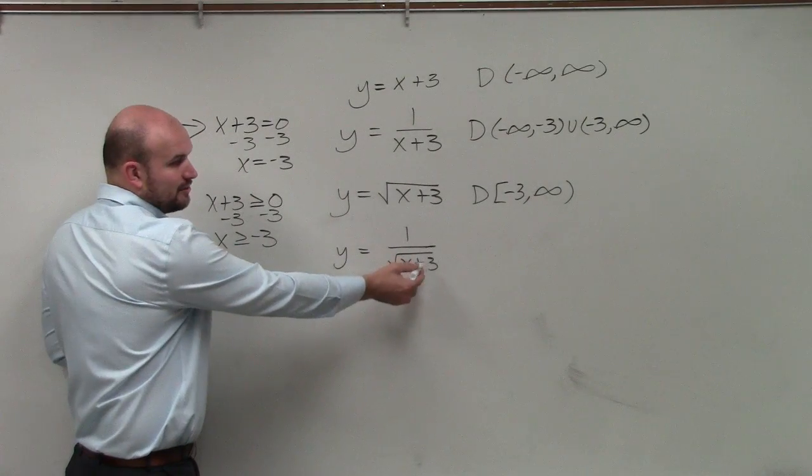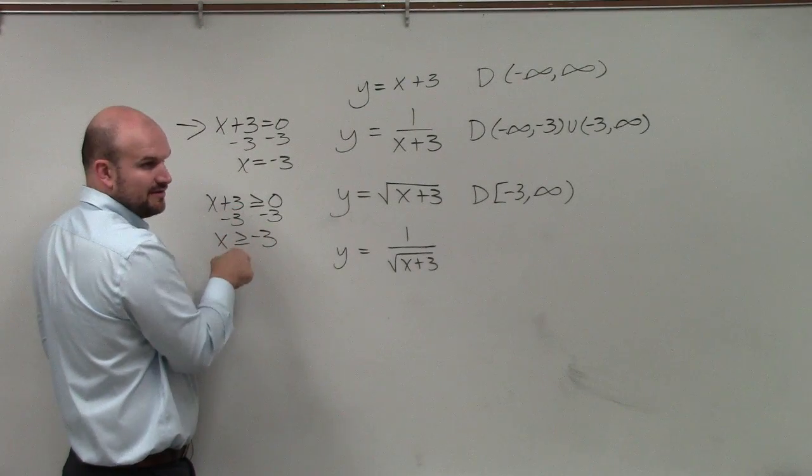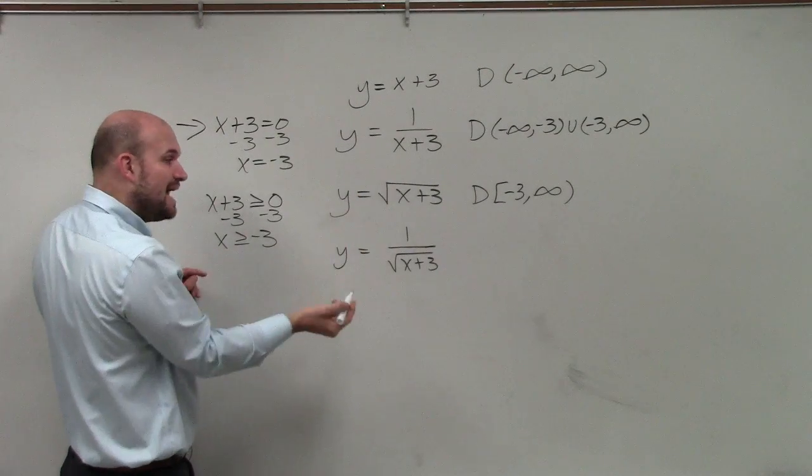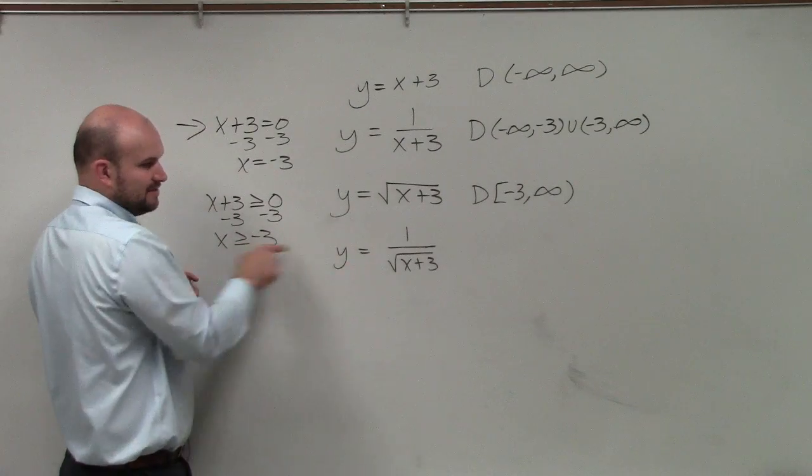We know that under the radical, we know the number has to be greater than or equal to 0. Or this has to be greater than or equal to negative 3, right? Based on the radical, we know that's true. But now the only difference is we can't have it equal to 0.